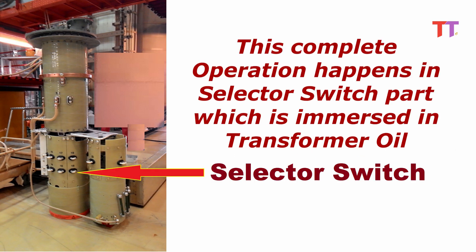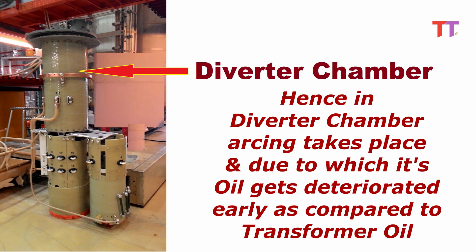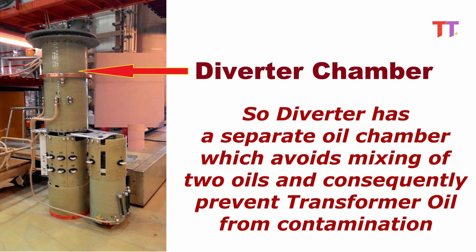This complete operation happens in the selector switch part, which is immersed in transformer oil. The other part of OLTC, called the diverter chamber, is at the top and has a separate oil chamber isolated from transformer oil. This diverter is used to divert minor arcs caused during OLTC operation. Arcing takes place in the diverter chamber, causing its oil to deteriorate earlier compared to transformer oil. So the diverter has a separate oil chamber which avoids mixing of the two oils and consequently prevents transformer oil from contamination.